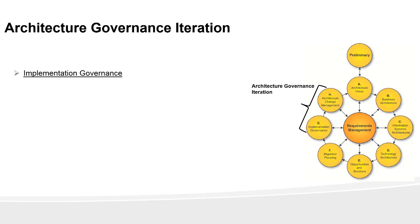In the implementation governance phase, as an architect your job is to ensure that the implementation team conforms with the architecture that you have defined. As an enterprise architect, you need to make sure development, testing, and deployment teams conform with the architecture that you have defined.